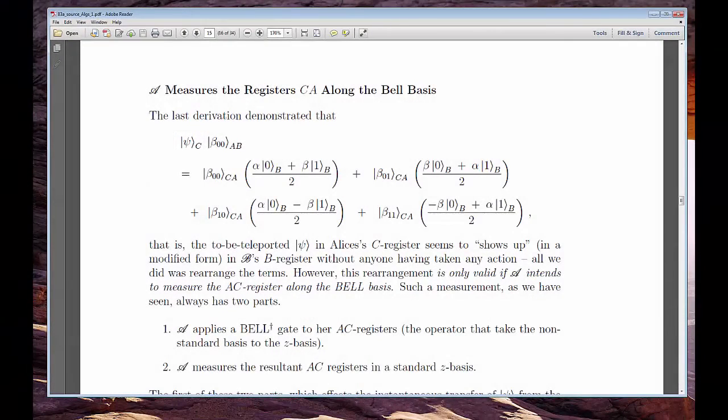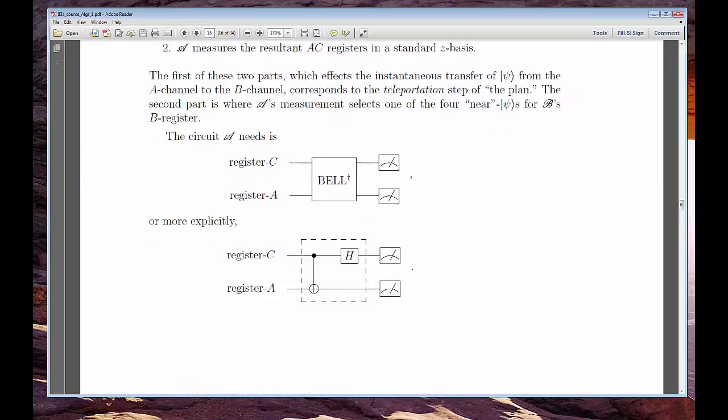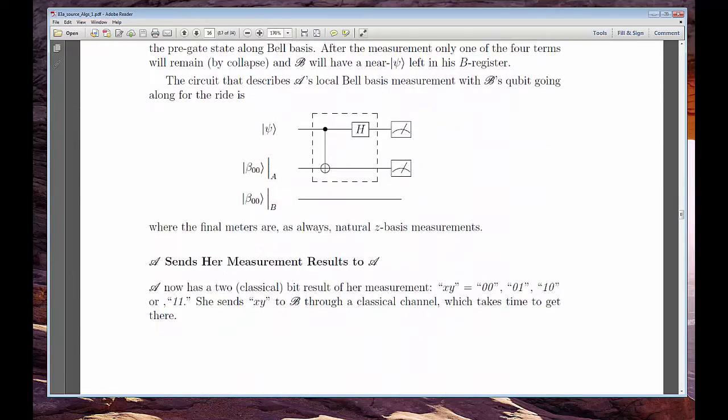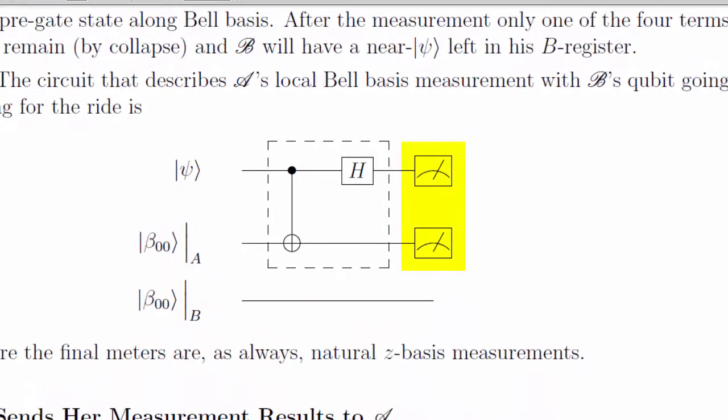She never sends this Ket, though. That's the point of teleportation. She has to get it to Bob without doing that. Instead, she feeds Ketsai along with her half of the Bell state into a binary gate. Alice now measures the output of that gate with respect to the Z basis. She'll see one of four classical strings: 00, 01, 10, or 11. Now, remember, each of those is an eigenvalue corresponding to the collapse state caused by the measurement.